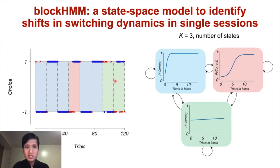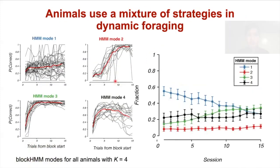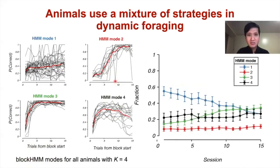I developed a new state-space method to quantify these dynamic shifts within the sessions. This technique is called Block Hidden Markov Model (BlockHMM), and it allows us to isolate changes in block transition modes in single sessions. Using BlockHMM, I found consistent types of switching dynamics across animals.